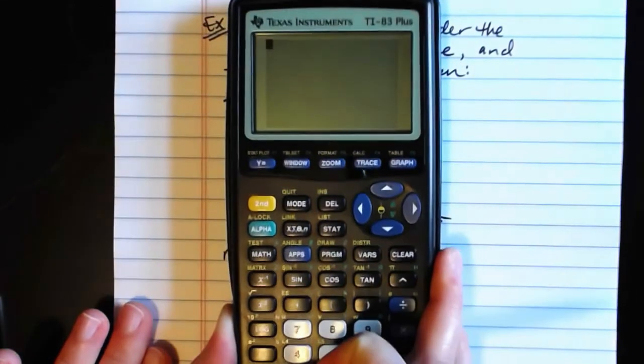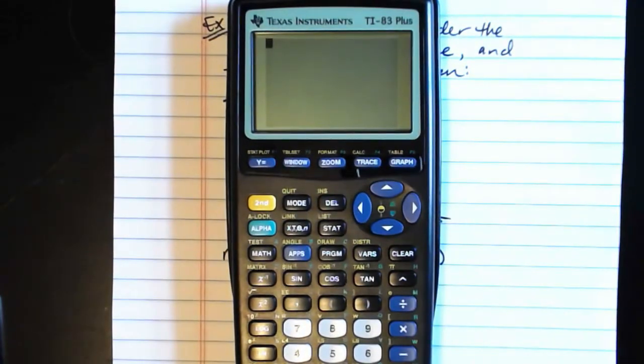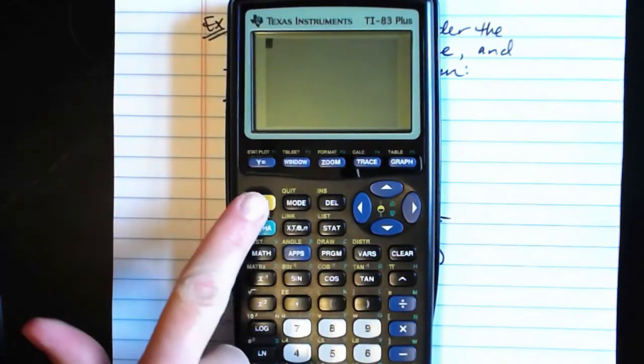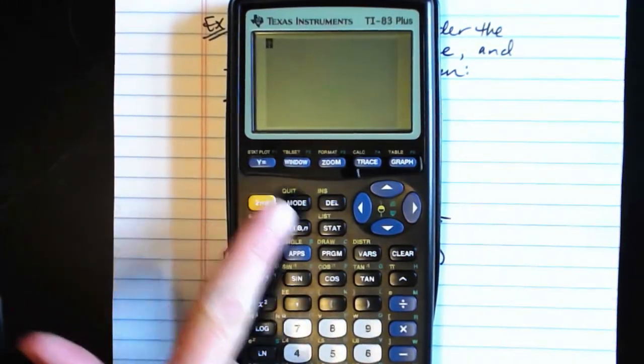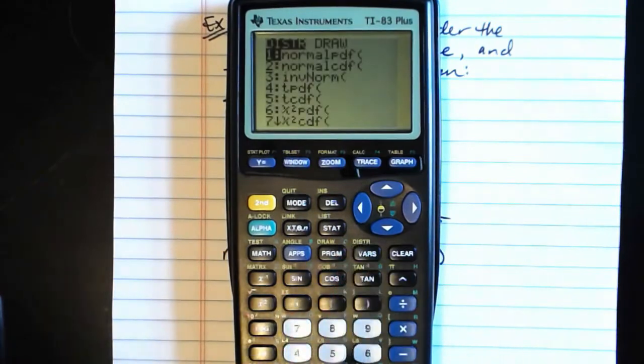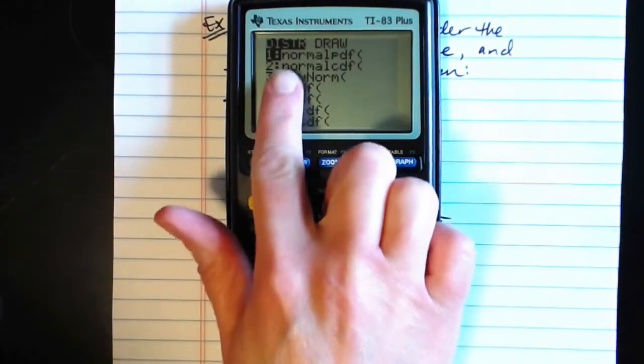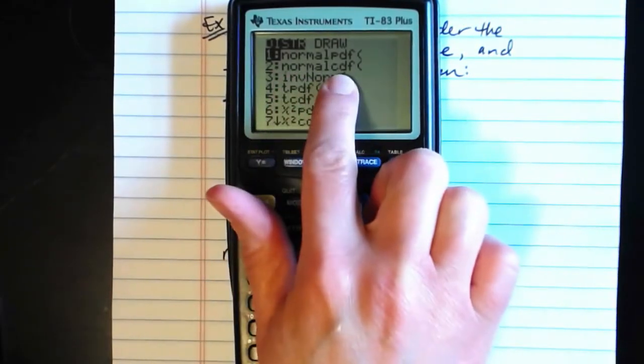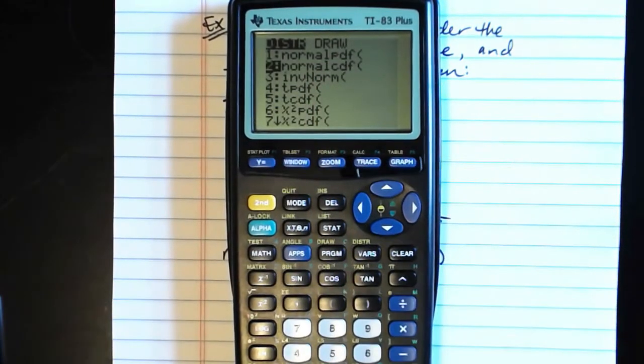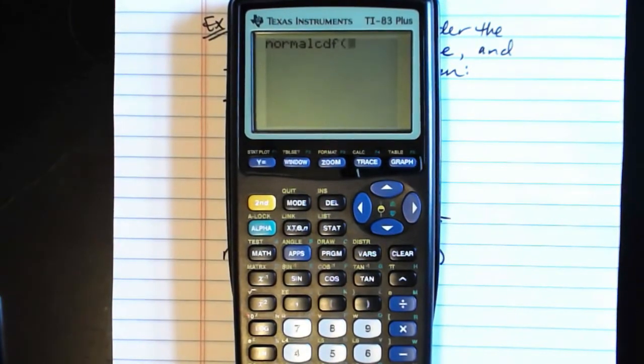With the old OS, let me show you what the screen would look like. And you find them both the same way. So you go to 2nd, VARS, your Distributions menu. And then NormalCDF is your very second option here. NormalPDF is first. NormalCDF is second. So we'll select NormalCDF.